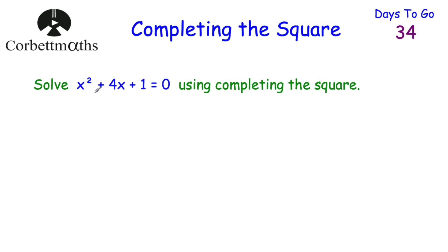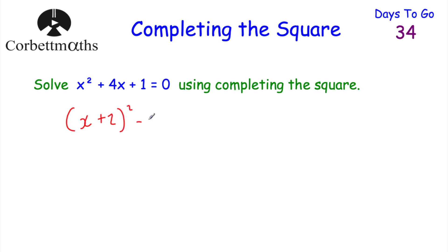Completing the square can be really useful for solving quadratic equations. Here we've got: solve x² + 4x + 1 = 0 using completing the square. We complete the square on the left-hand side: (x + 2)² — since half of 4 is 2 — then minus 2 squared which is 4, plus 1 equals 0. Simplifying: (x + 2)² − 3 = 0.